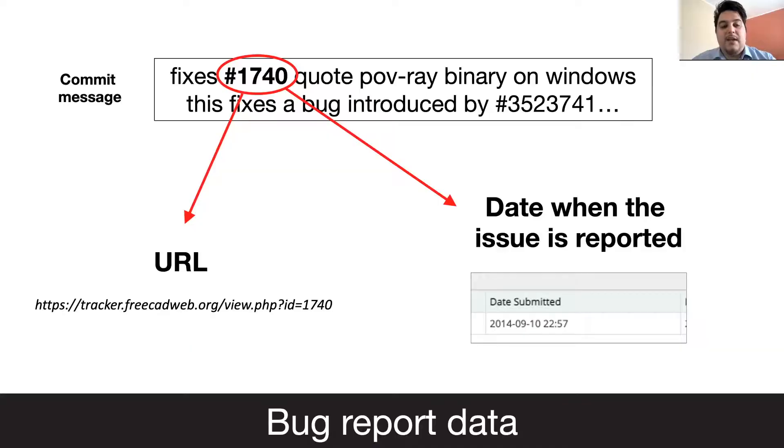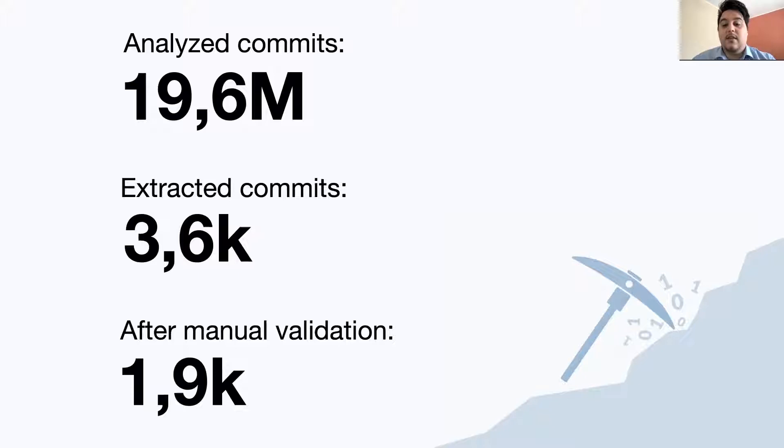As bug report data, we extract the linked issue to the commit message, and we take the date when the issue is reported and the URL. As a result, more than 90 million commits are analyzed, where about 3600 are extracted. After the manual validation, we obtained about 1009 commits.